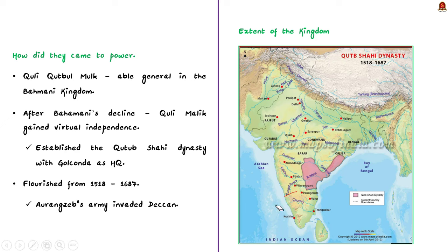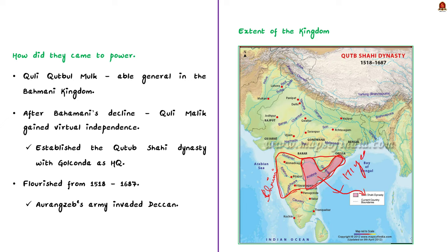Later, with the disintegration of the Bahmani kingdom in the early 16th century, Quli Qutb ul-Mulk gained virtual independence. As a result, he established the Qutb Shahi dynasty with Golconda as his headquarters. The kingdom flourished from 1518 until 1687 when Aurangzeb's army invaded the Deccan. The dynasty spanned 171 years, during which eight kings ruled the land.